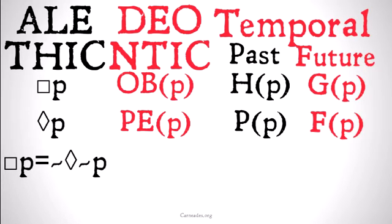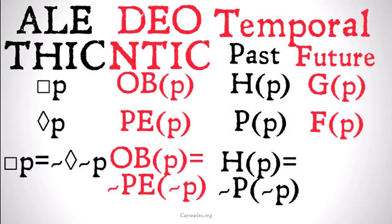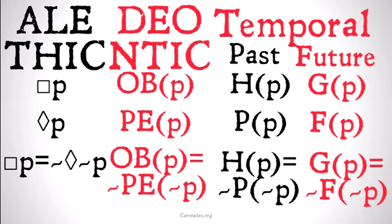Our change of modal quantifier — 'it's necessary that P is equivalent to it's not the case that it's possible that not P' — maps onto the other logics as well. In deontic logic: obligatory that P is identical to it's not the case that it's permissible that not P. In past temporal logic: it has always been the case that P is identical to it's not the case that at some point in the past it was the case that not P. And it will always be the case that P is identical to it's not the case that at some point in the future it's the case that not P.